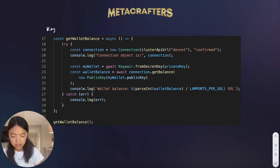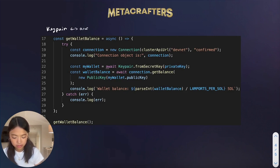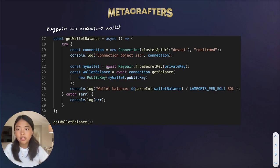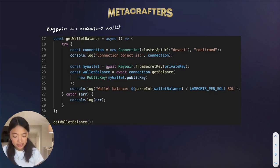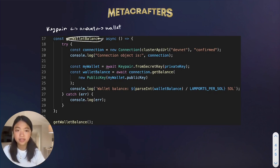A key pair means that you've made an account, which is basically a wallet. So you can think of these as more or less synonymous terms for now. The next thing that we want to do is view the wallet balance, which is where the function getWalletBalance comes in.